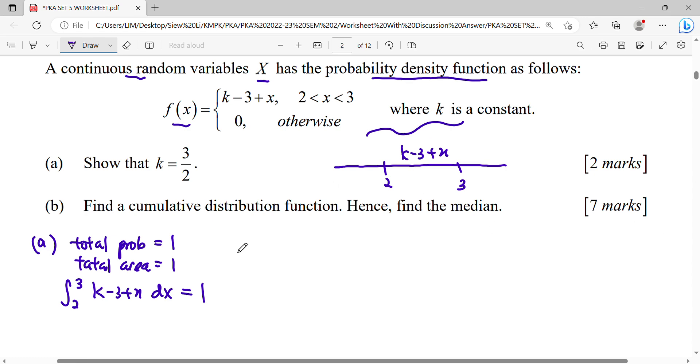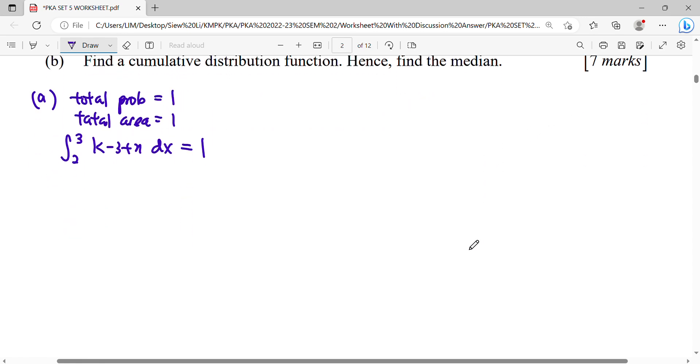So remind here, have to write your DX. Siapa tak tulis DX, kita terus tolak satu markah. Okay, then we start doing this integration. It will be KX minus 3X plus power plus 1 over new power, upper limit 3, lower limit 2. Then we substitute upper limit minus lower limit 2. Then we figure out what is our K.